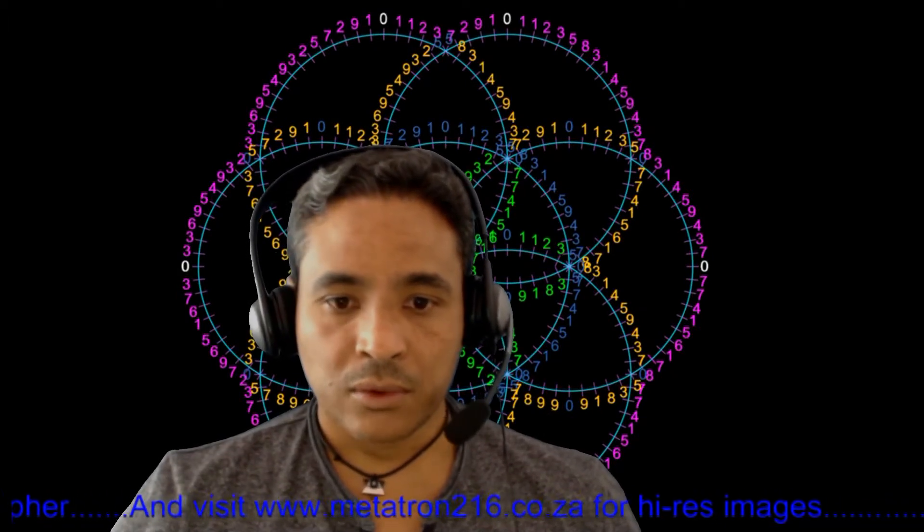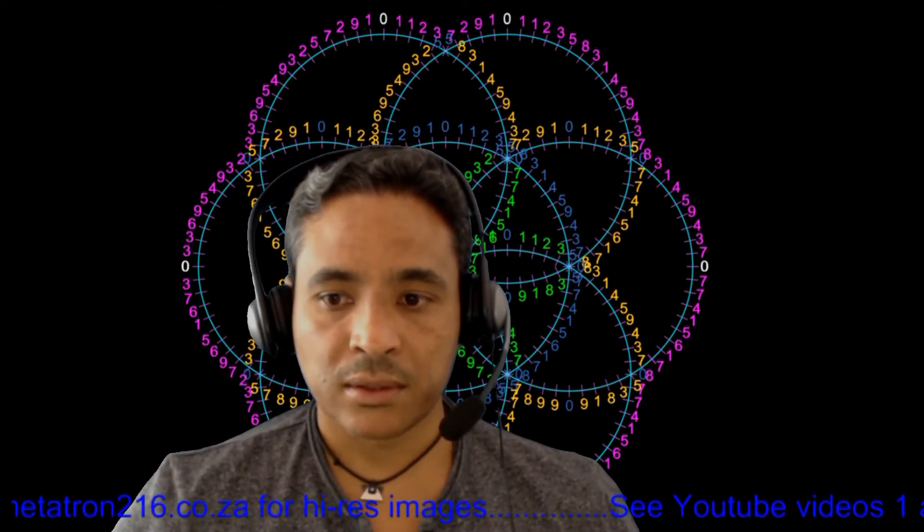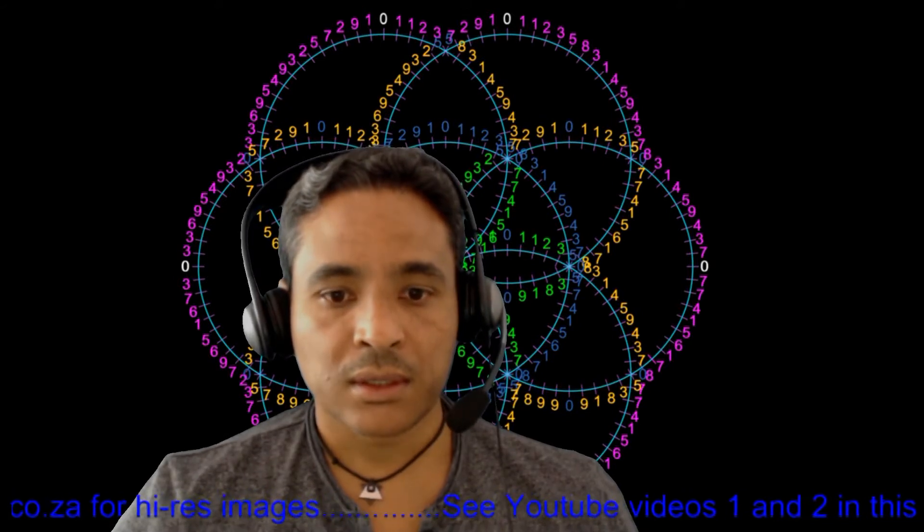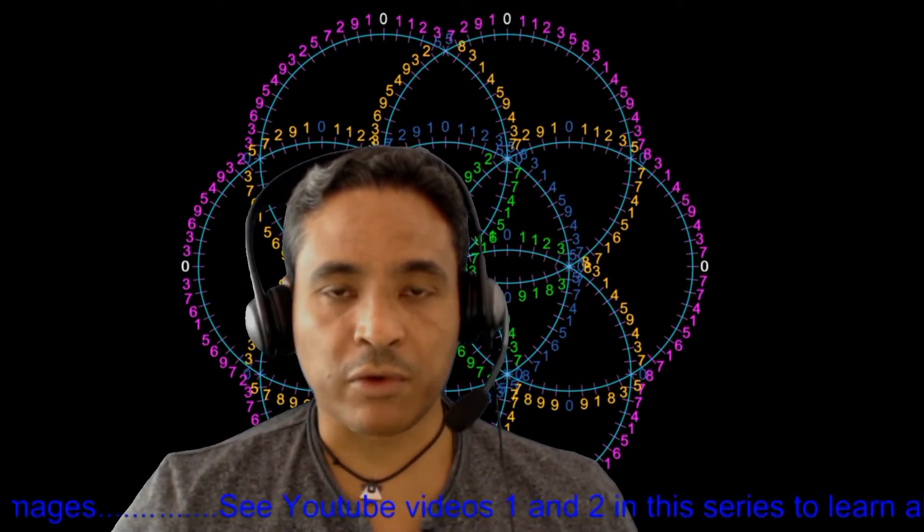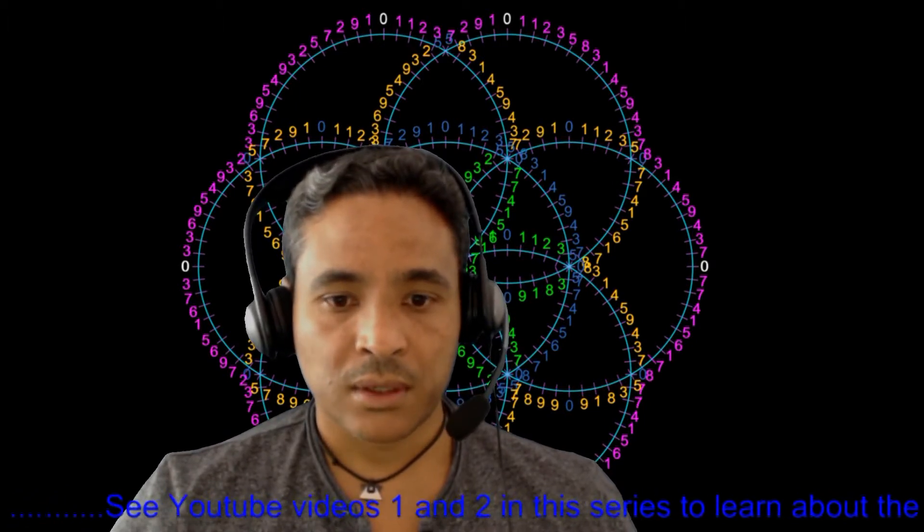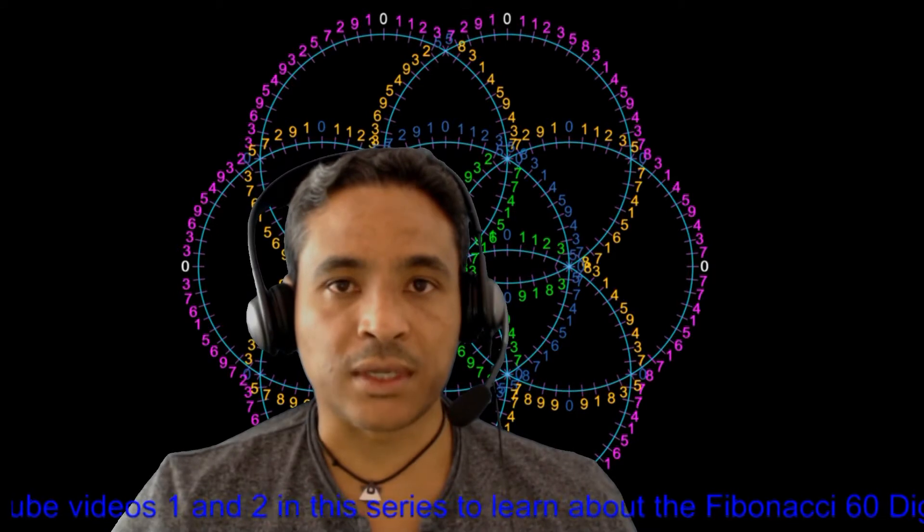In video 1, we saw that the Fibonacci 60 digit cycle conforms to our clocks here on Earth and it represents one day of time. It even encodes the number 24, which is the number of hours in one day. So, one circle or one cipher represents one day.